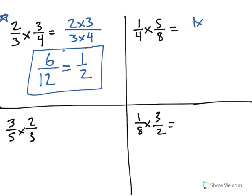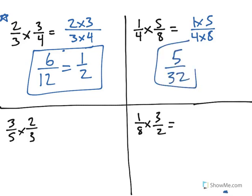Same process: numerator times numerator, denominator times denominator. 1 times 5 is 5, 4 times 8 is 32, and so on and so forth.